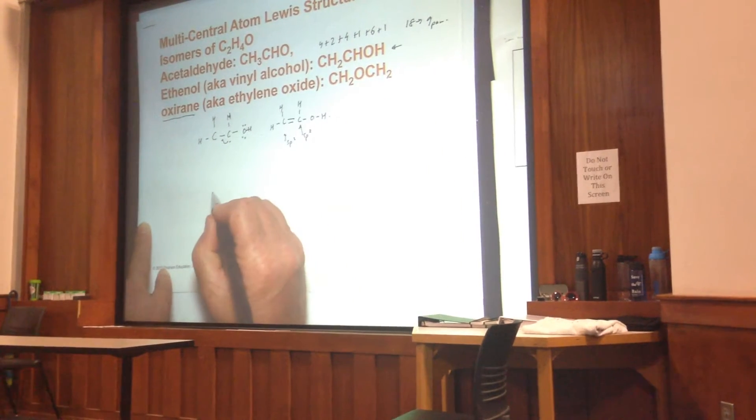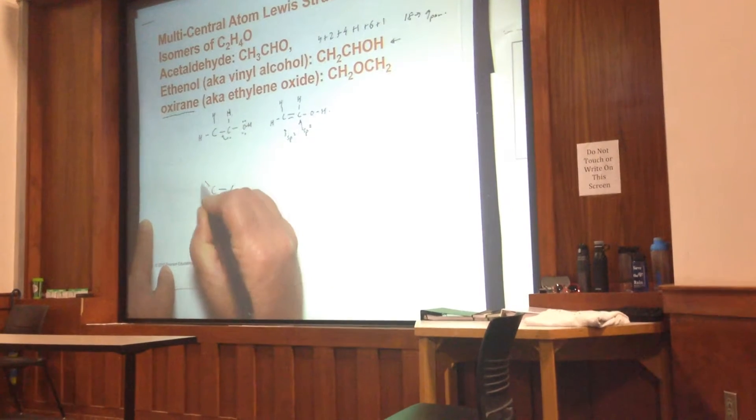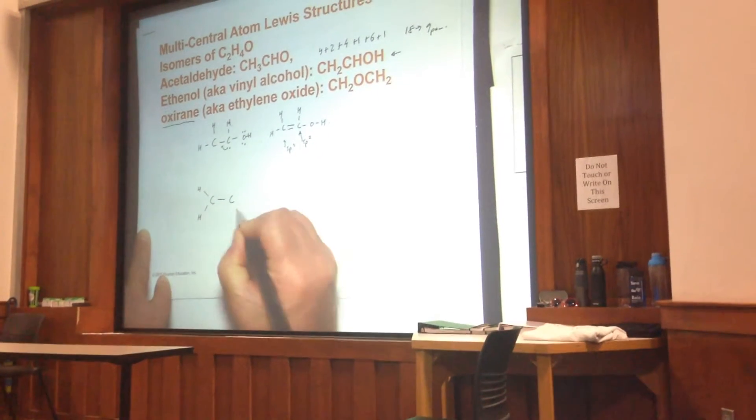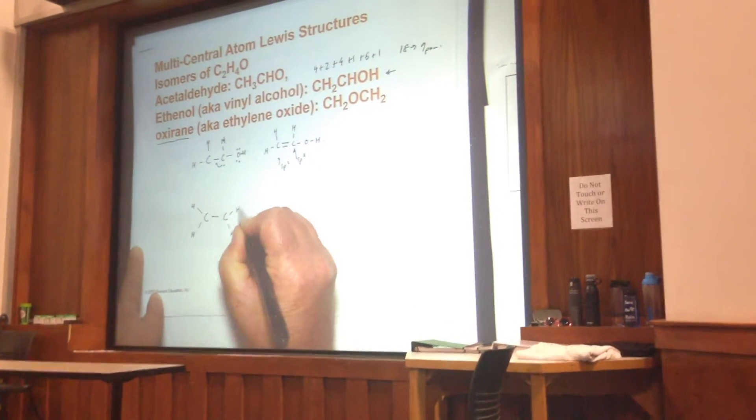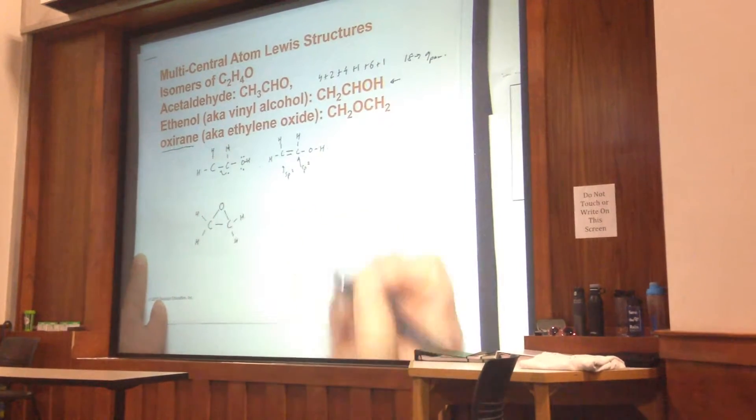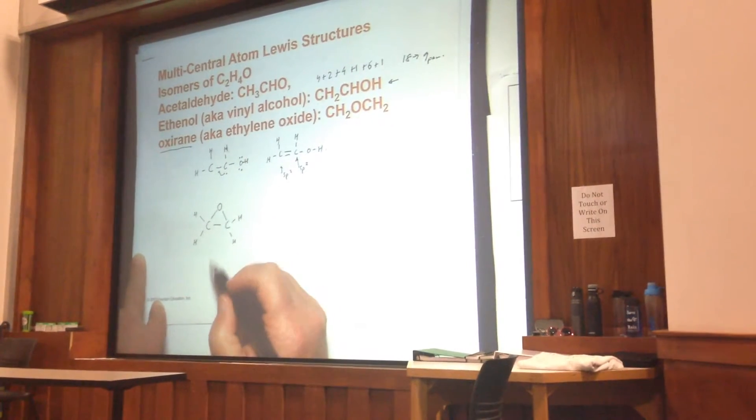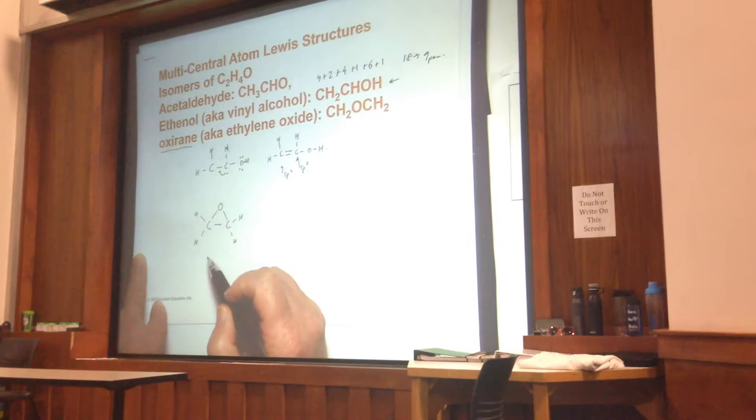So this one's a little interesting because what you have here now is the structure here. And the oxygen actually sits here. So you have this 3-membered ring, as it's called. This is actually this oxirane. This basically says it's a 3-membered ring.